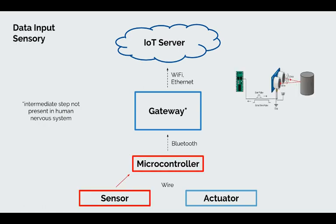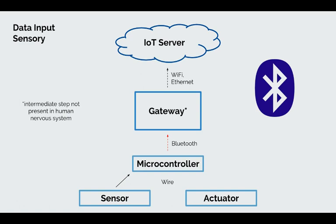To start off, we must first gather data, just as our five senses do. Therefore, the object must be equipped with a sensor or group of sensors attached to a microcontroller, which will allow it to gather data from its surroundings. Once it has collected this information, the microcontroller must have some means of data transmission, like our peripheral nerves.